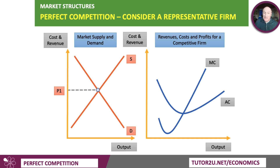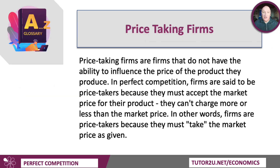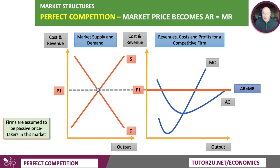Each firm is a passive price taker — it takes the price set by the market. A price-taking firm does not have the ability to influence the price of the good or service it's providing. In perfect competition, firms must accept the prevailing market price; they can't charge more or less. So P1, set by the market, becomes the firm's demand curve and average revenue curve. Because average revenue is constant, marginal revenue equals average revenue — AR equals MR in perfect competition.